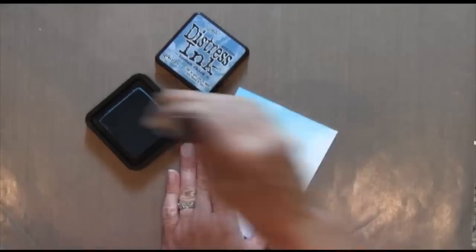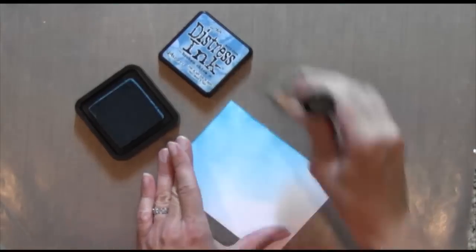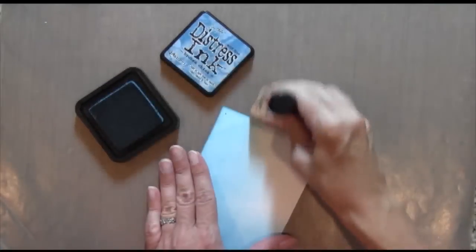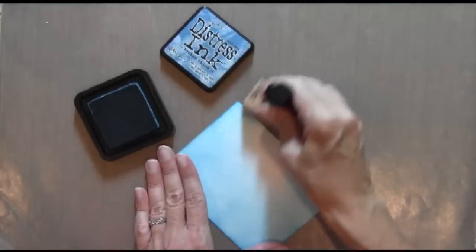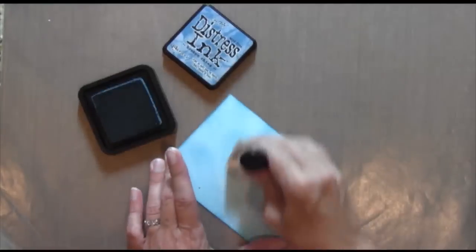I'm taking my Broken China Distress Ink and I'm going to apply it to a piece of Neenah cardstock. I did a tutorial a couple weeks ago on this, if you want to look on my blog for that, about how to apply ink to paper.